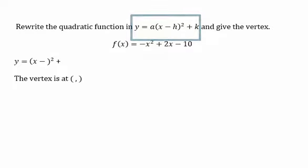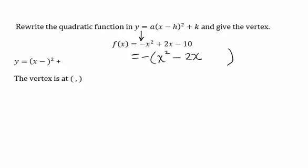And then we'll give the vertex. So the first thing that we'll do is to factor out whatever the leading coefficient is from the first two terms. So in this case, we're going to factor out a negative 1, which changes both of the signs of the first two terms, and bring down the constant, in this case negative 10.